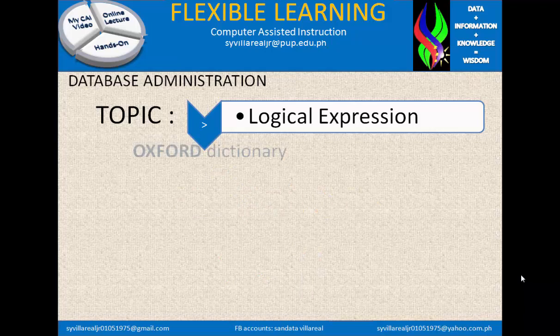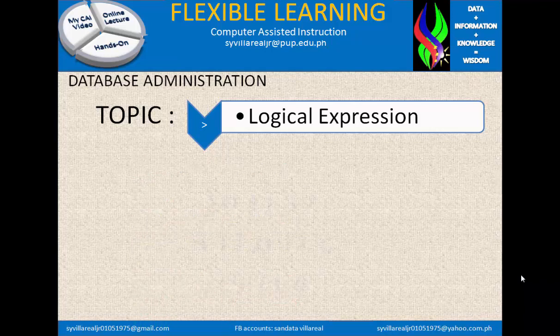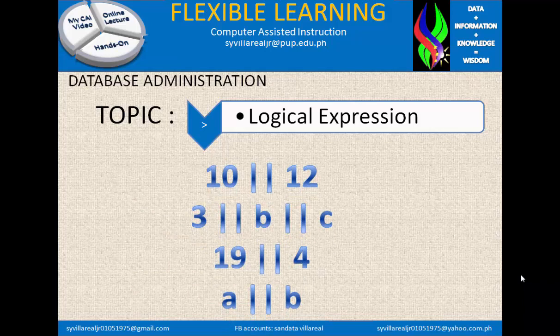What is OR? In Oxford, Longman, and Merriam Dictionary, there is none. An example of OR: 10 OR 12. 3 OR B OR C. 19 OR 4. And A OR B. The OR operator can be considered as answerable by true or false.